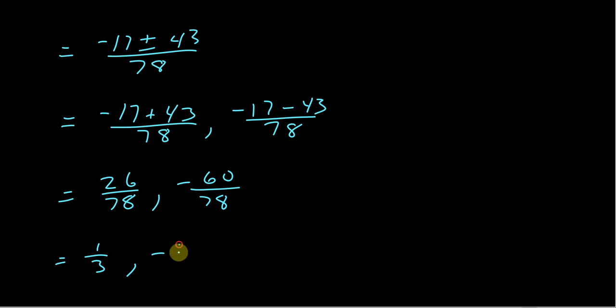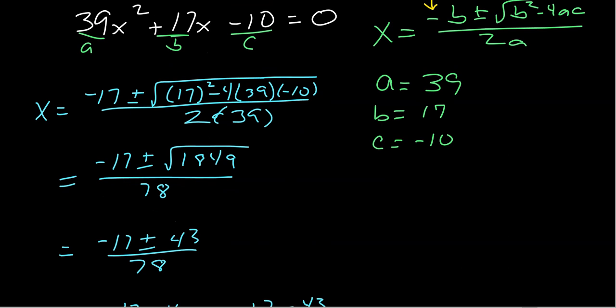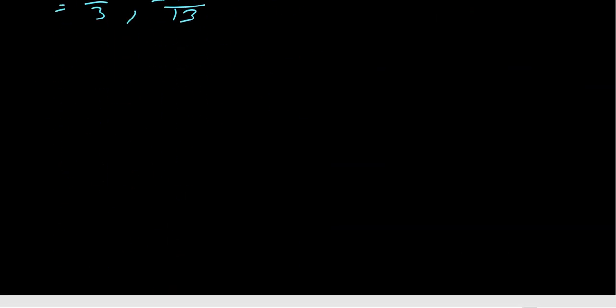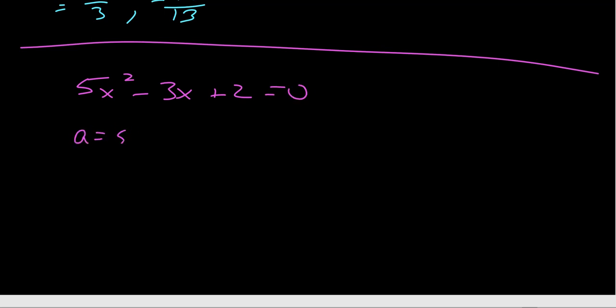And those are my two possible answers for this quadratic equation. I said be real careful. As just another quick kind of comment, if we have something along the lines of, let's say, 5x squared minus 3x plus 2 equals 0, okay, so a is 5, b is negative 3, and c is 2.